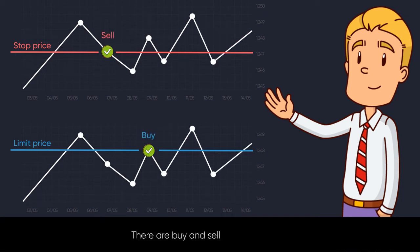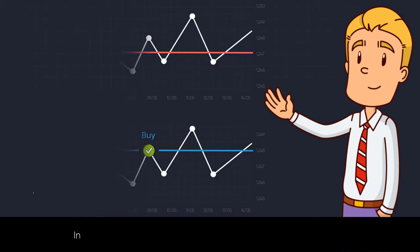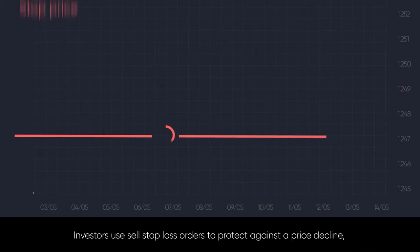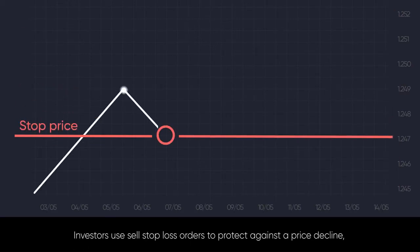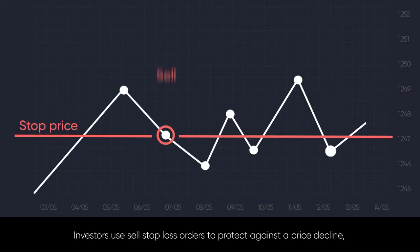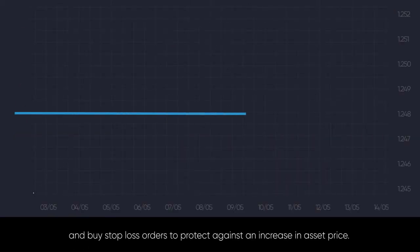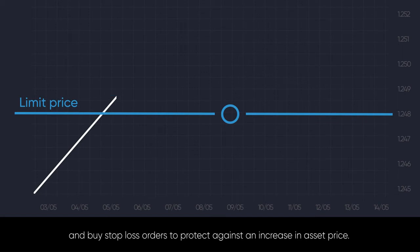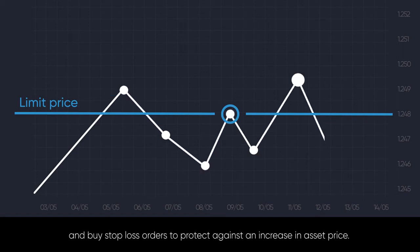There are buy and sell stop loss orders. Investors use sell stop loss orders to protect against a price decline, and buy stop loss orders to protect against an increase in asset price.